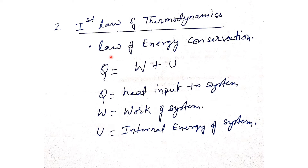Energy can be converted into work and internal energy of the system. This is the equation of the first law of thermodynamics, where Q is the heat input to the system, W is the work of the system, and U is the internal energy of the system.